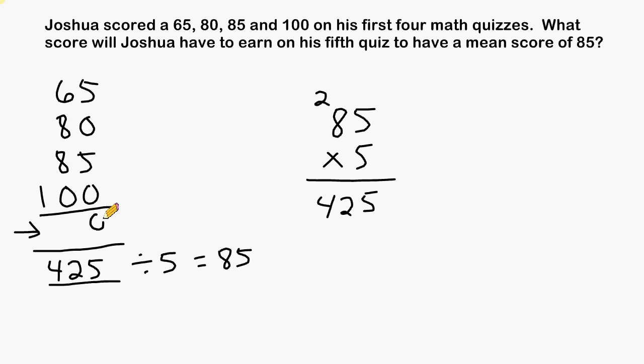5 plus 5 is 10, carry the 1. 8 and 8 is 16, plus 7 more is 23, carry the 2. And 2 plus 1 is 3. So through the first four quizzes, Joshua has a total score of 330.